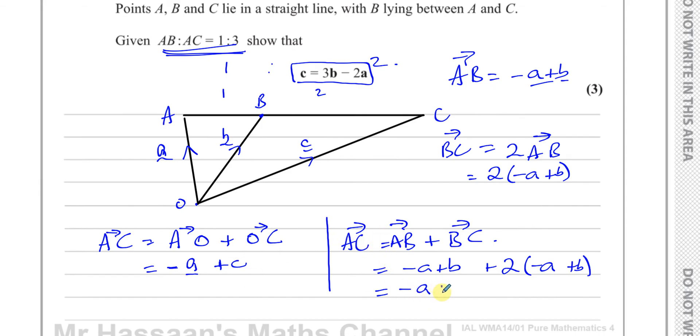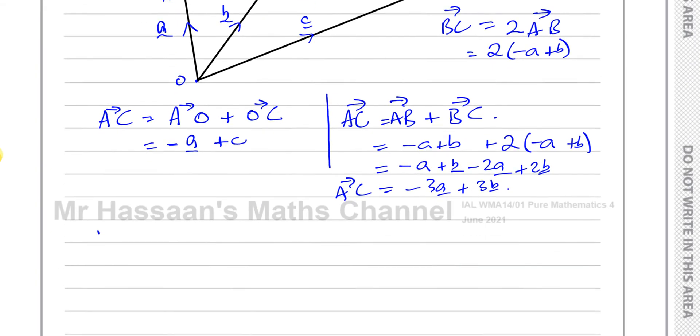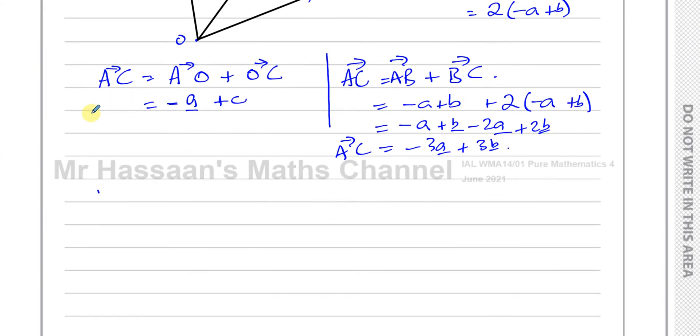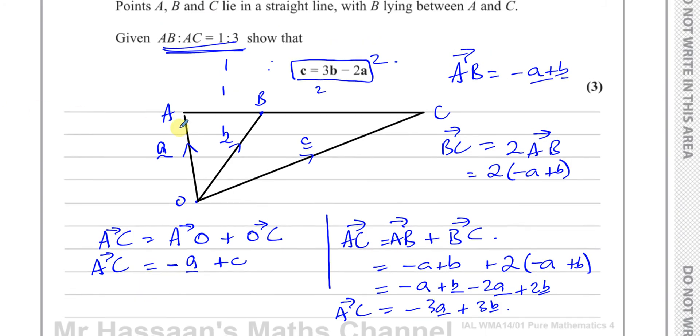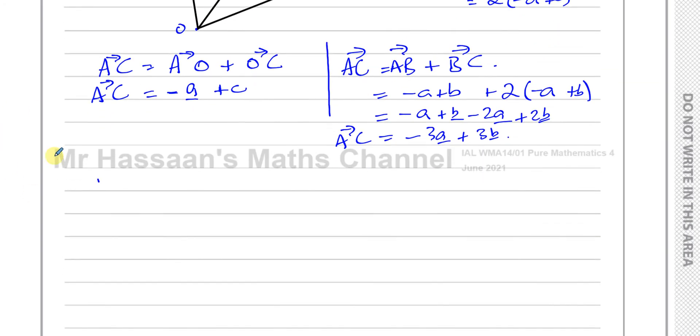So that's minus a plus b. I'm going to have two times minus a, which is minus 2a. And two times b, which is plus 2b. If I simplify that, I have AC is equal to minus 3a plus 3b. That's the vector from A to C. And AC is also, in terms of going straight from A to C, like from A to O and then O to C, is minus a plus c. So these two must be equal to each other because they're both taking you from A to C.